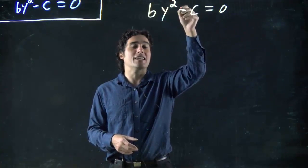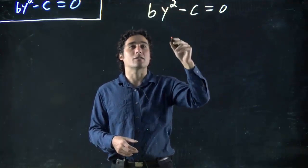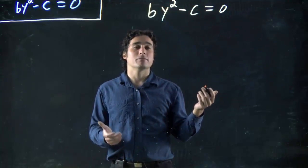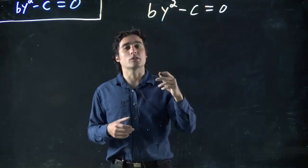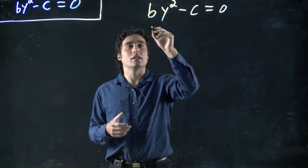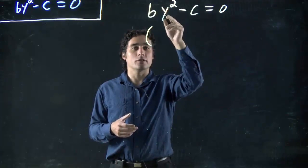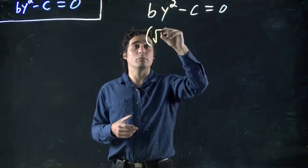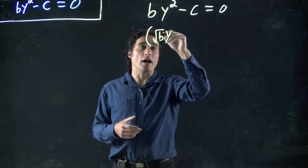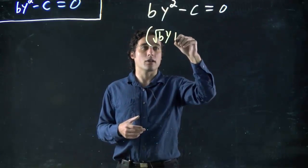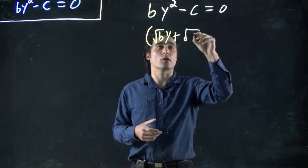Well, the solution, well even if the first one was squared, the solution is still going to be square root of the first, so in this case square root of b and the square root of y squared which is just y, plus the square root of the second, so square root of c.